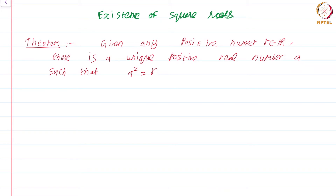The proof idea is similar to what was done for showing that the Archimedean property together with the nested intervals property implies completeness. We are going to successively approximate the required square root — put it inside smaller and smaller intervals and then use the nested intervals property to find the required square root.